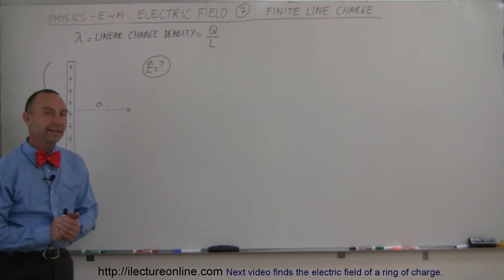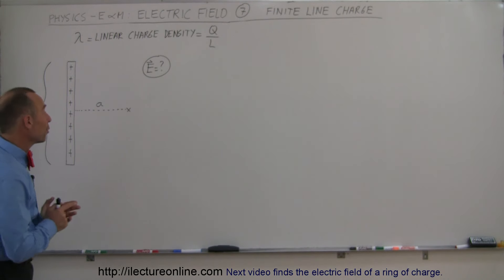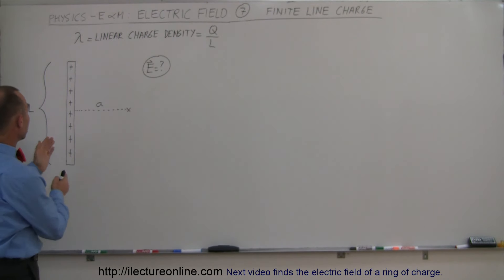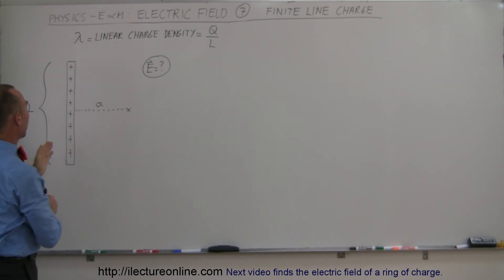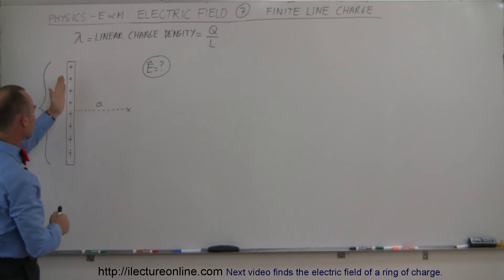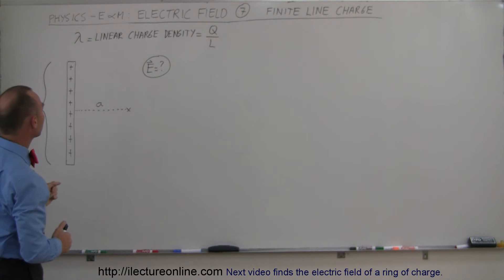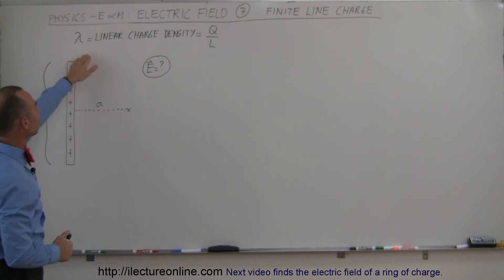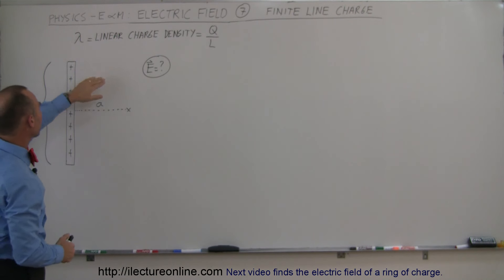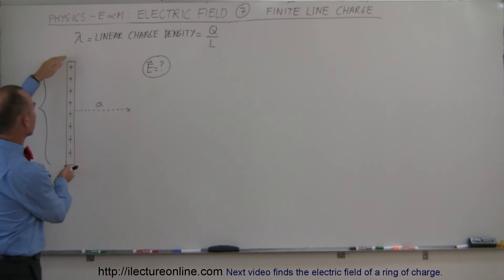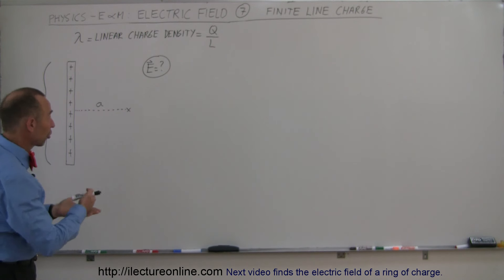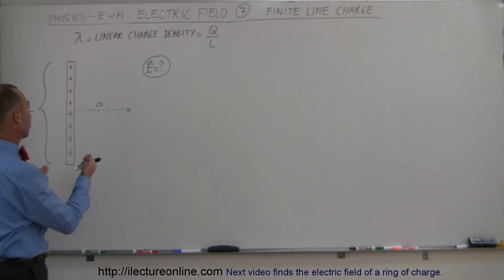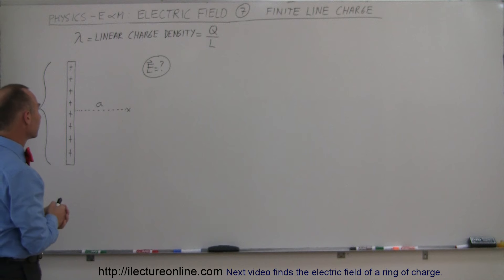Welcome to ElectronLine. In this video we have a linear object of finite length L, and it has some positive charge on it. The linear charge density is equal to the charge placed on the object divided by the total length — the charge per unit length is what we call the linear charge density.